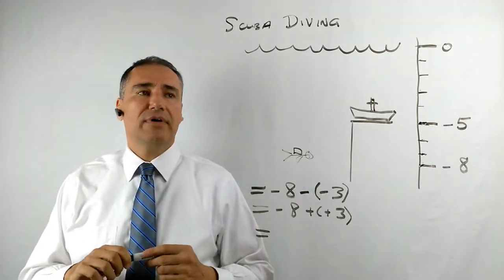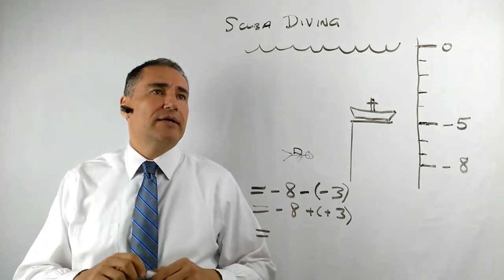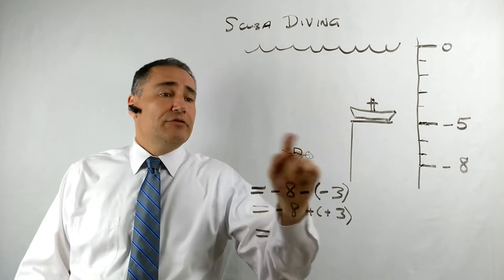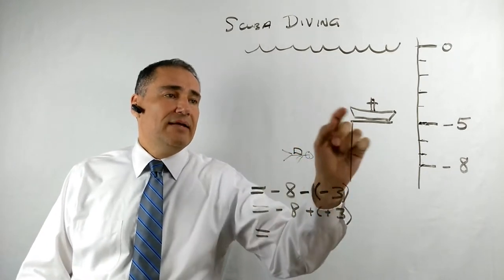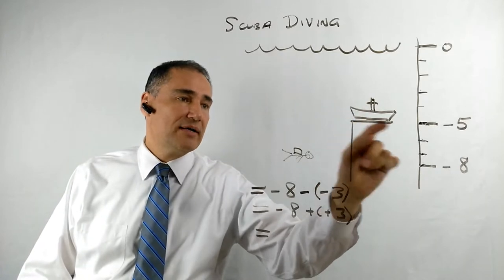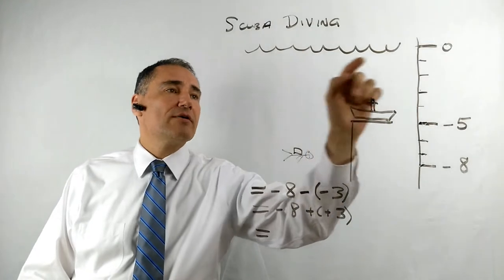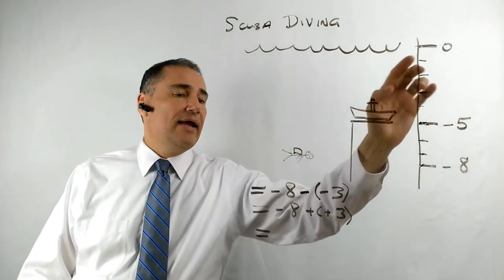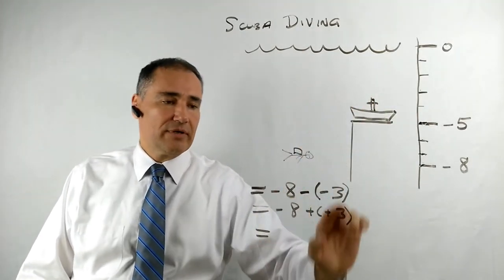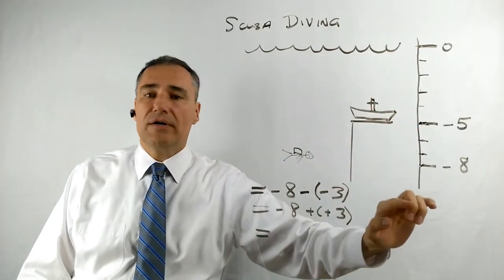So let's go through this example of what I've drawn here. This is your scuba diver right down here, and he wants to get to this shipwreck. He or she wants to get to this shipwreck. There's a cliff that the ship is on. Here's the water level, and here's the equations that we're going to look at in a minute. And this is our number line.